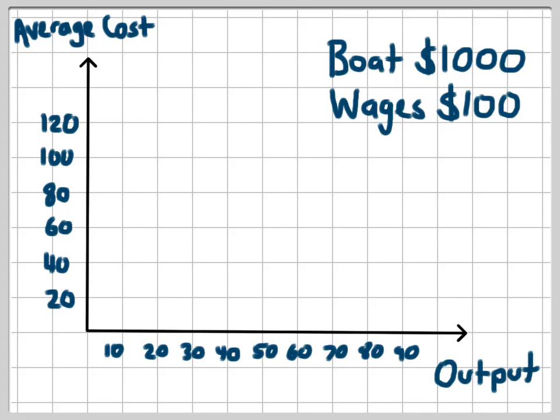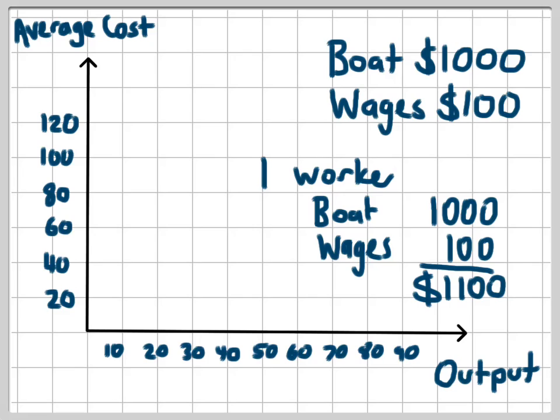If I have one worker I need to pay them a wage of $100. I also need to pay for the boat which is going to cost me $1,000. So the total for one worker will be $1,100. The total cost will be $1,100 and the output is ten fish. So for my output of ten my average cost is going to be $1,100 divided by ten which is $110. So the average cost here at ten is going to be up here at $110 and we will put a dot in there.